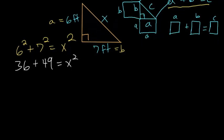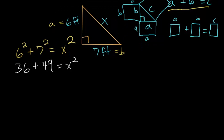36 plus 49, if we add the 6 to this, we get 55. And adding 30 to 55 brings us up to 85. So x squared is equal to 85.